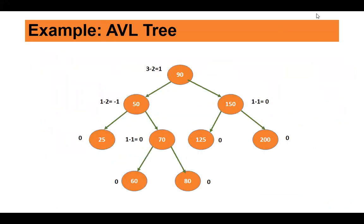Let us look at an example to make the balance factor more clear. This is an AVL tree and it is a binary search tree. Node 90 is the root — in its left subtree all keys are smaller than 90, and in the right subtree all keys are greater than 90. There are no duplicate keys. So it is a binary search tree with the special attribute of height balance. Node 60 is a leaf node, 80 is also a leaf node — no left child, no right child — so the balance factor is zero. The balance factors of all the leaf nodes are zero.